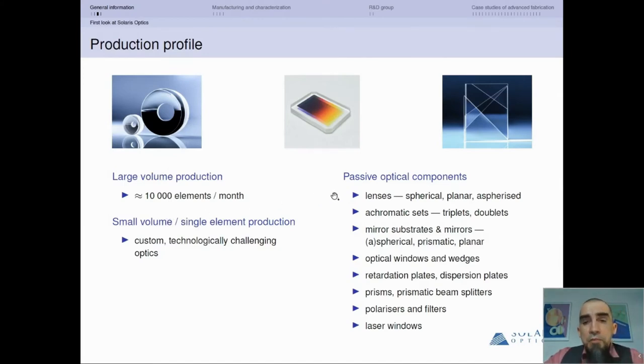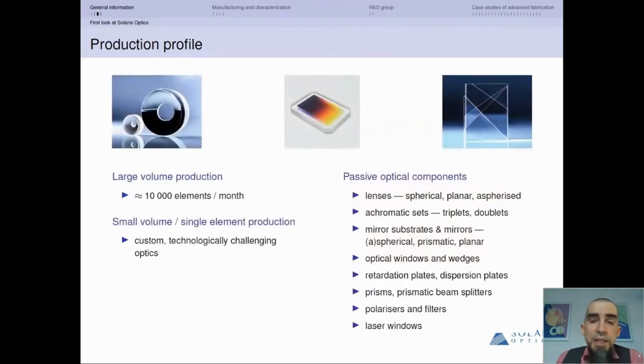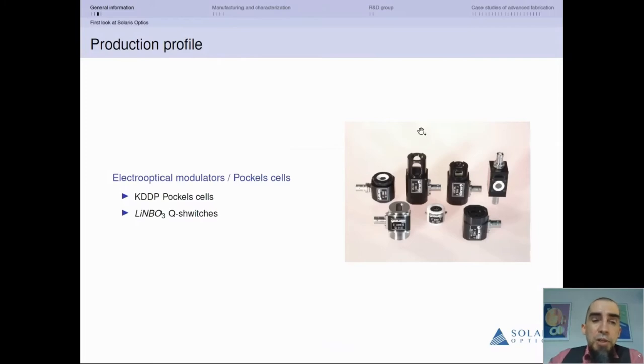Our production profile is focused on passive optical elements including lenses, mirrors, mirror substrates, optical wedges, optical windows, filters, and also some small assemblies like achromatic sets as well as more complicated assemblies. The active optical elements that we do, which is not the majority of our production, includes Pockels cells and Q switches.